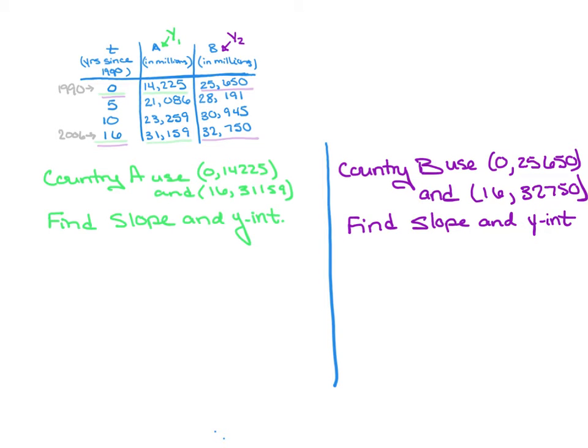We're going to need to do the same thing for Country B, except its point at 1990 was (0, 25,650) and at 2006 was (16, 32,750). If you do not use the points that WebAssign tells you to—and this one specifically said to use the first and last data points—but if it said to use different years, I would need to make sure that I found the correct years.